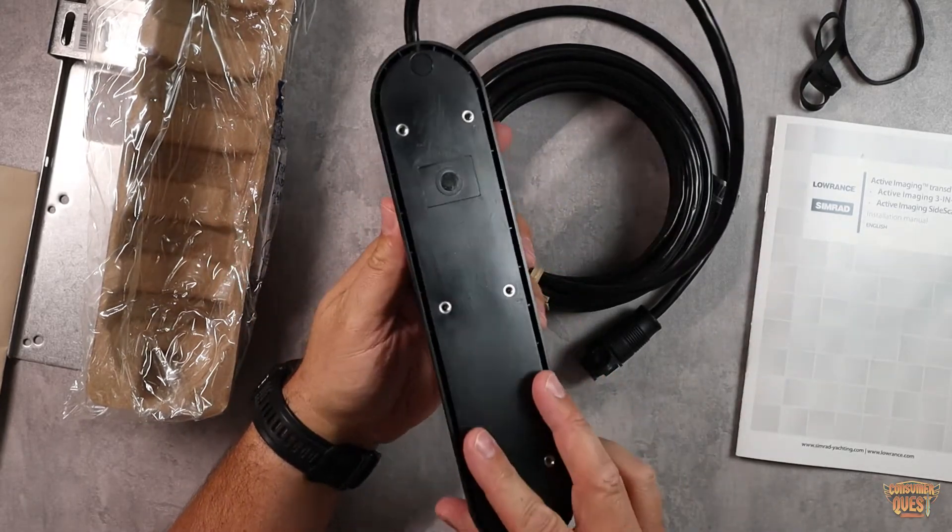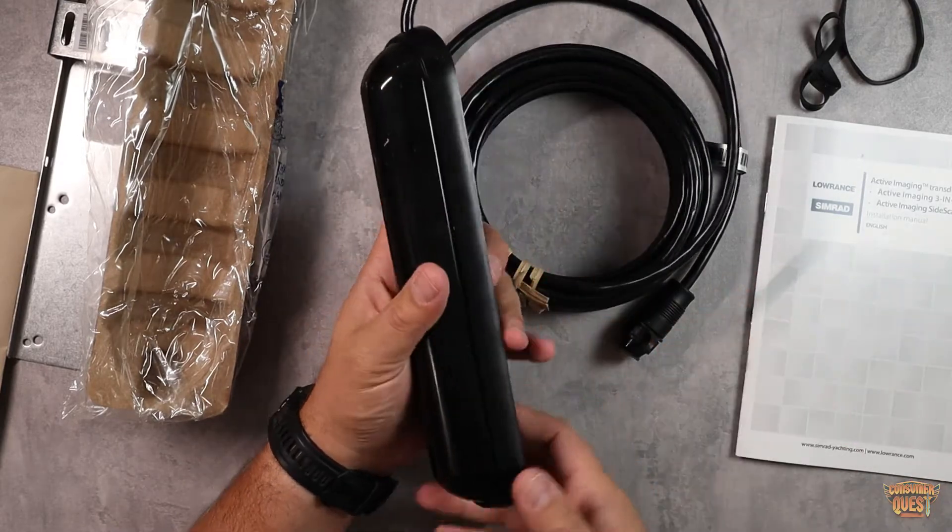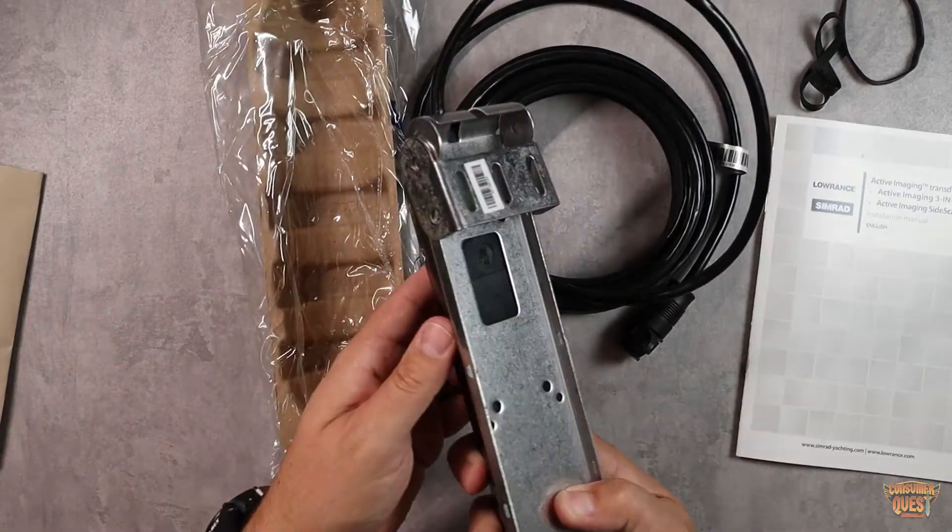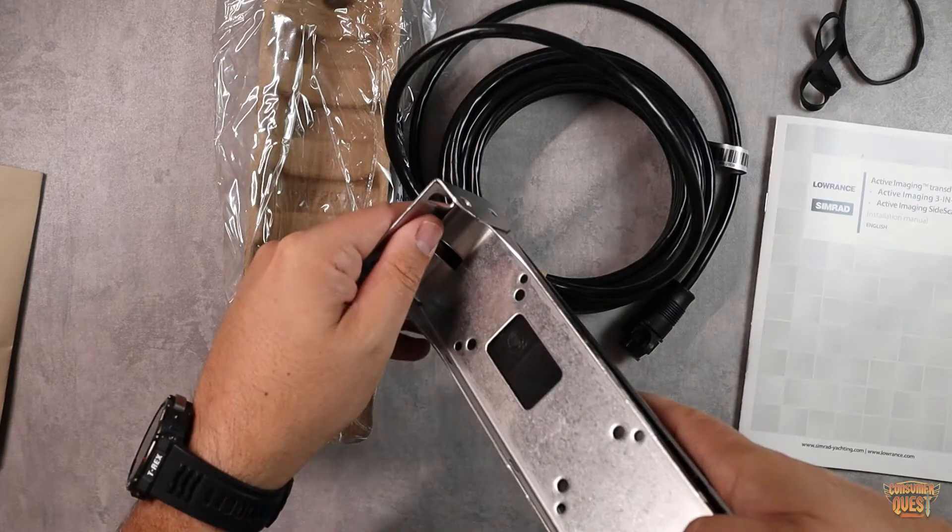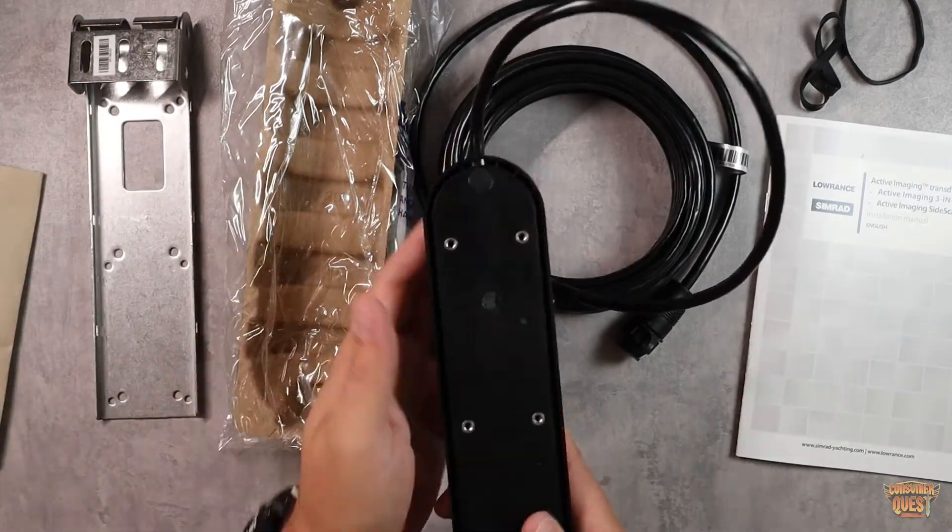But outside of that guys, this is the transducer. Very straightforward. Very simple. I mean, there's really not a lot to it. You're just going to mount this guy to the mounting bracket, just like so. And then you're going to mount this basically anywhere that you're going to be mounting this. And it allows you kind of have a swivel action. You can kind of put it in any configuration that you need to, depending on where you want this.